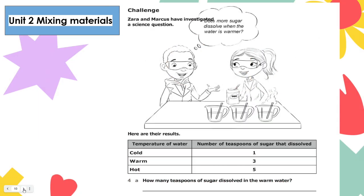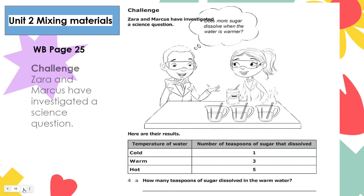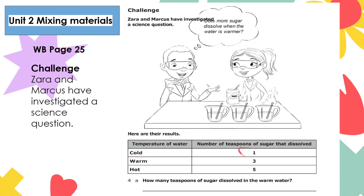Here's the challenge on pages 25 and 26. Zara and Marcus have investigated a science question. Marcus asked: does more sugar dissolve when the water is warmer? Here are the results. The table shows the temperature of water and the number of teaspoons of sugar that dissolved. For cold water: one teaspoon. Warm water: three teaspoons. Hot water: five teaspoons.